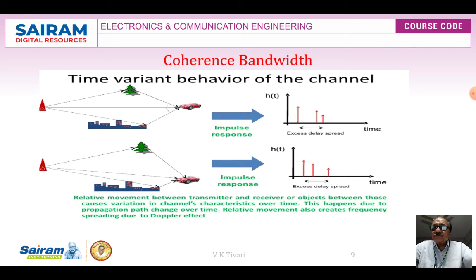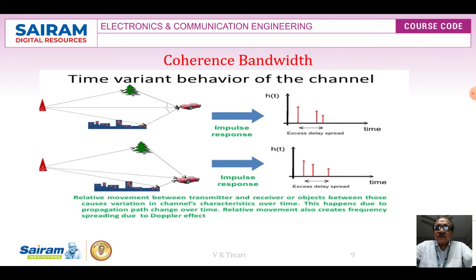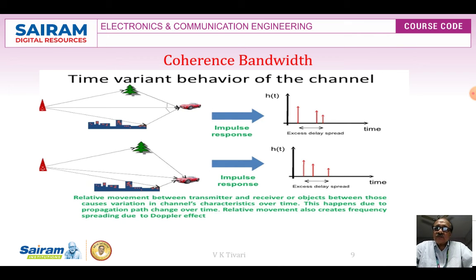From the base station, waves are scattered or reflected — some travel line-of-sight to the subscriber, while others reflect off obstacles. Of these, the impulse response accumulates the excess delay spread reaching the receiver with a little added delay. In the diagram, we show the impulse response and the excess delay spread. Relative movement between the transmitter, receiver, or objects between them causes variation in channel characteristics over time. This also creates frequency spreading due to the Doppler effect.